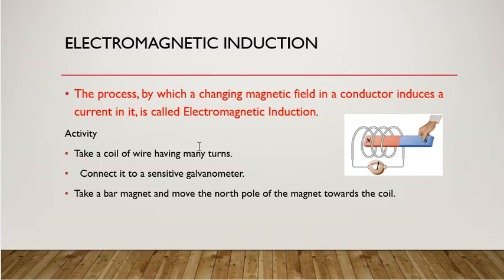Let's see this diagram. We do an activity: take a coil of wire having many turns. We can see here that a coil has been taken with many turns. Now we will connect it to a sensitive galvanometer. A galvanometer measures current. Here we can see a galvanometer connected to the wire in a closed circuit.